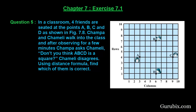Let us solve it. Here is the figure and these are the four friends seated at the points A, B, C and D, given in a rectangular coordinate system. We can easily find the coordinates: A is (3, 4), B is (6, 7), C is (9, 4), and D is (6, 1).